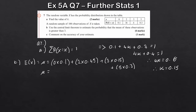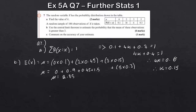Adding those up: 0 plus 0.9 plus 0.45 plus 1.5 gives mu equals 2.85. Now we need the variance. For discrete random variables, the variance is E(X²) minus mu squared, so that's E(X²) minus 2.85 squared.